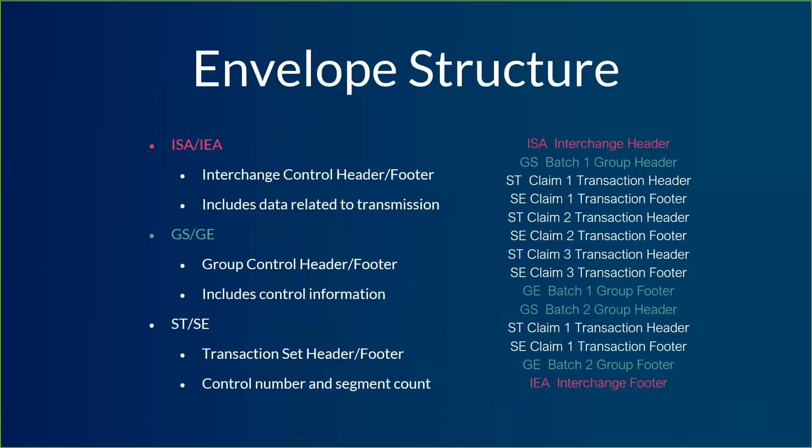Inside those, we get an ST to SE — the transaction set header and footer. Each payload is going to be surrounded by an ST at the top and an SE at the bottom. This is going to have a transaction level identifier, something for tracking, and it's going to count the number of segments inside that transaction set so that we know if we've got the entire thing.